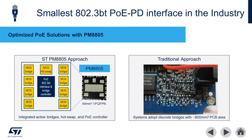The PM8805 integrates dual active bridges, eight total 100 volt MOSFETs, a high current 100 volt hot swap MOSFET, and a POE controller in a single 64 millimeter square package. Compare this to the traditional approach that consumes 800 millimeter square of PCB area just for a discrete passive bridge solution.